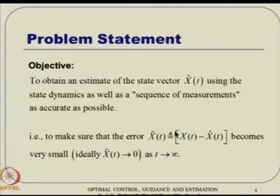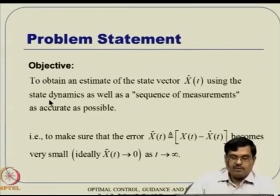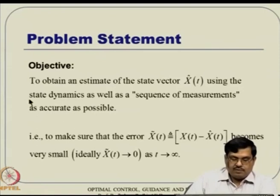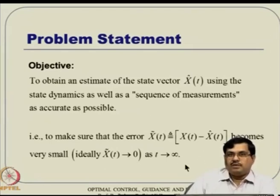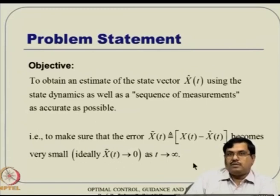Using these relationships, we derived the continuous time Kalman Filter. The objective was to estimate x_hat(t) using the system dynamics as well as the sequence of measurements as accurately as possible. The error of estimation, x minus x_hat(t), should become very small or ideally go to zero as t goes to infinity.